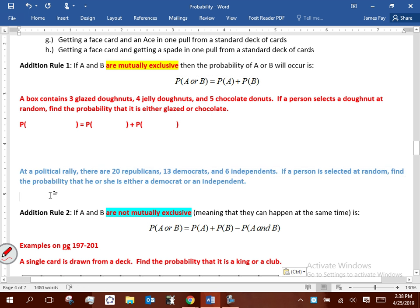It says at a political rally, there are 20 Republicans, 13 Democrats, and six independents. If a person is selected at random, find a probability that he or she is either a Democrat or an independent.